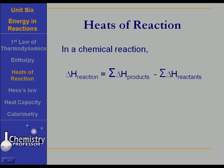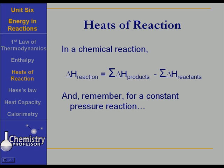In a chemical reaction, the change in enthalpy for the overall reaction may be found by taking the sum of the change in enthalpy of the products minus the sum of the change in enthalpy of the reactants. And you've got to remember that for a constant pressure reaction, the heat of the reaction is equal to the change in enthalpy for the reaction. But that only works for a constant pressure reaction. Constant volume reaction is a whole different situation.